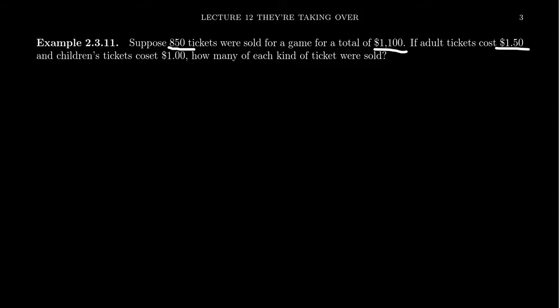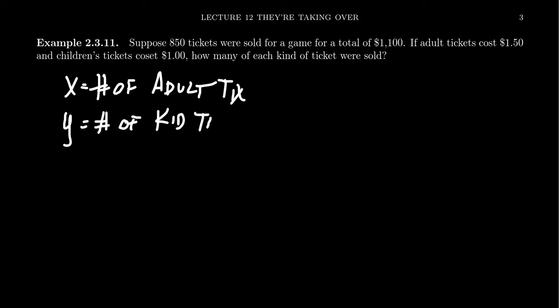We have two unknowns here. The first unknown would be how many adult tickets. We'll call that x, where x is going to be the number of adult tickets sold at this game. And then y will naturally be the number of children tickets, kid tickets that were sold at this game.